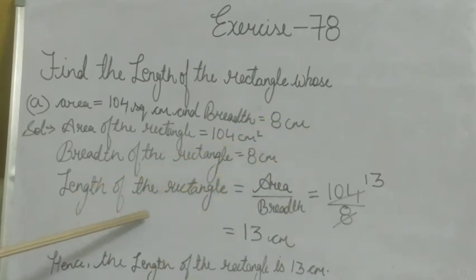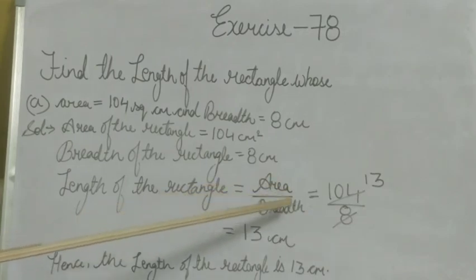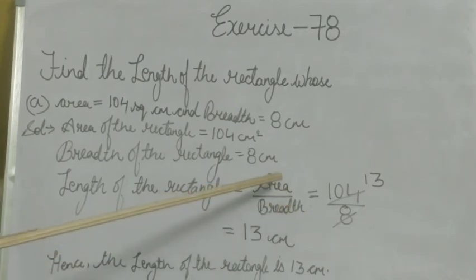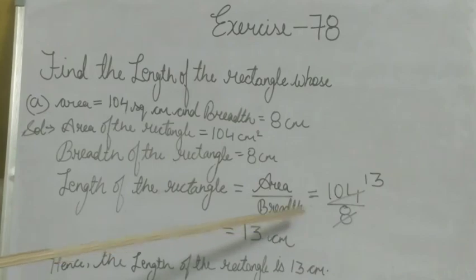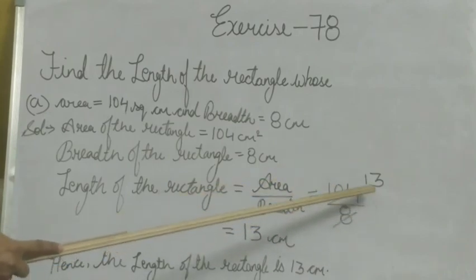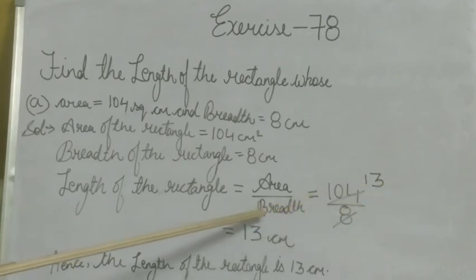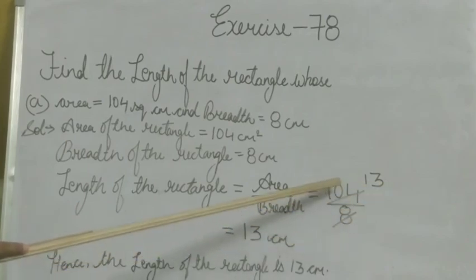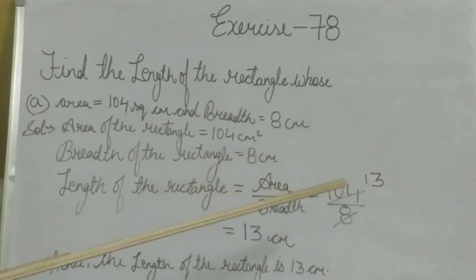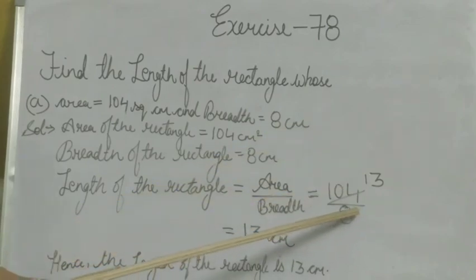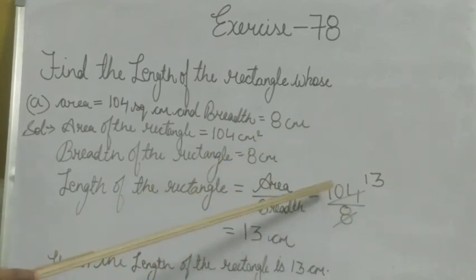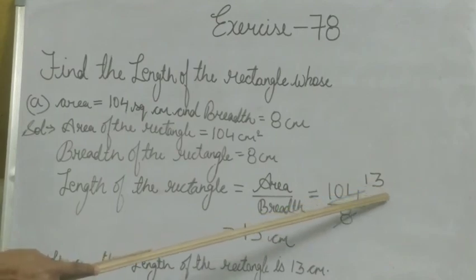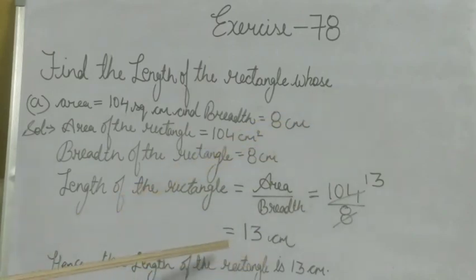To find the length of the rectangle, we use: length equals area divided by breadth. The area is 104 and the breadth is 8, so we calculate 104 divided by 8. In the 8 times table, 104 comes 13 times. So we get 13 cm. Hence, the length of the rectangle is 13 cm.